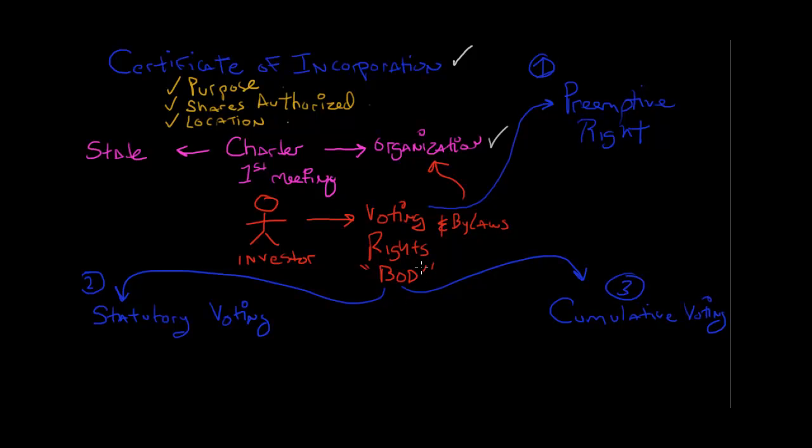Now there are three important features to consider. The first one is referred to as preemptive right, which allows a stockholder to maintain current proportion of shares owned.